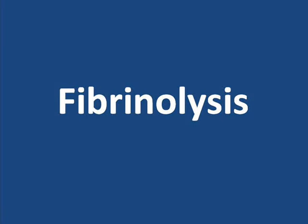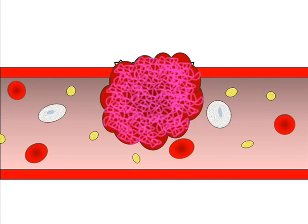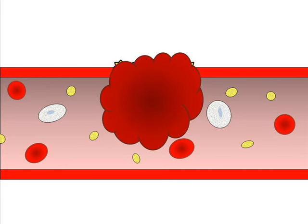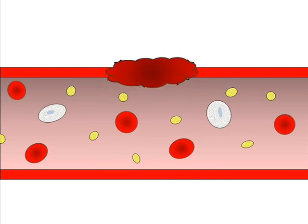The other group of chemicals keeps clot growth under control by cutting the fibrin strands and actually dissolving part of the clot. These chemicals are part of the natural process known as fibrinolysis. Fibrinolysis occurs as chemicals called plasminogen activators are slowly released from the inner lining of the damaged vessel wall. These plasminogen activators trigger the destruction of the fibrin strands that hold the clot together. So coagulation inhibitors can only stop the growth of the clot, but fibrinolysis can actually dissolve part or all of the clot.